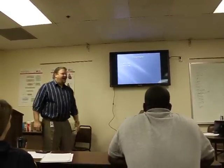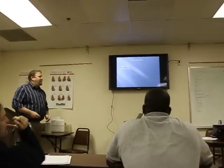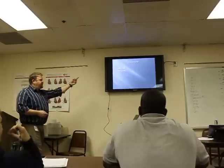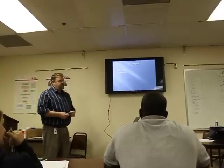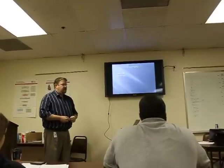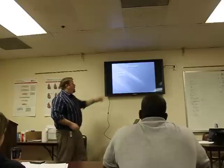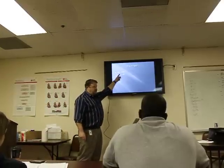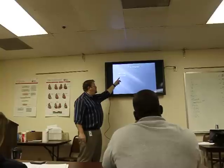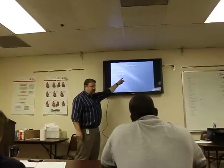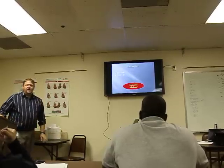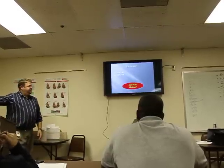Next case: pH of 7.5 and a PCO2 of 35. Is our 7.5 normal? No. What about our PCO2 — is that normal? Yes. So our pH is abnormal and our PCO2 is normal. What is this? Metabolic alkalosis. Why is it alkalosis? Because the pH is above 7.45. There you go.